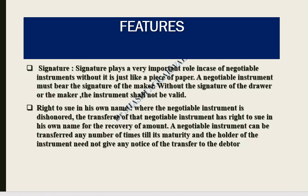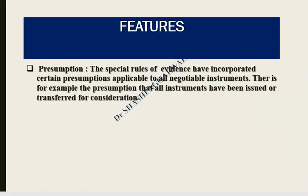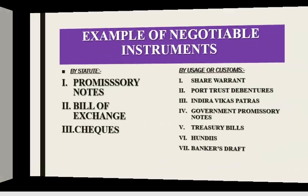A negotiable instrument can be transferred any number of times before maturity — you can transfer it at any time without needing to inform the debtor or the person liable. Regarding presumptions, this is a special rule of evidence. There are certain presumptions attached to a negotiable instrument that we assume are already satisfied. There is always a presumption that all instruments have been issued or transferred for consideration.